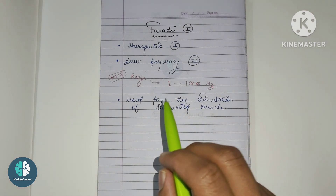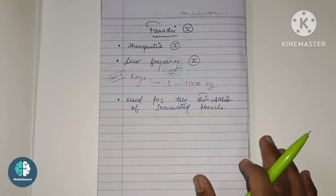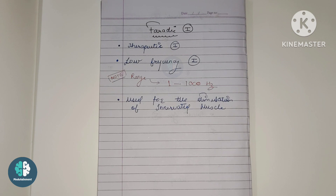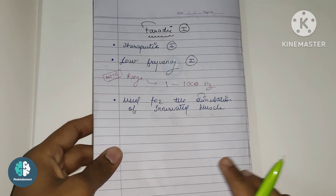Faradaic current is generally used for the stimulation of innervated muscles. It is not used for denervated muscles because denervated muscles need long duration currents to get excited. So we use faradaic current for the stimulation of innervated muscles. This is just a brief introduction about faradaic current, and in upcoming videos we will see its various uses.